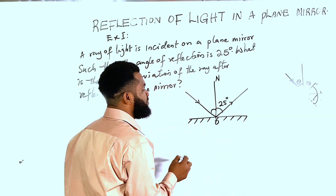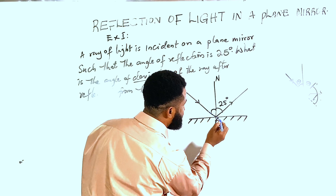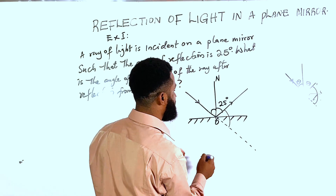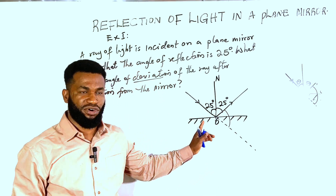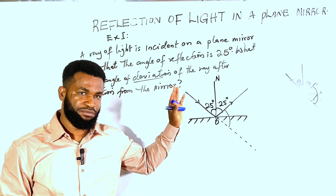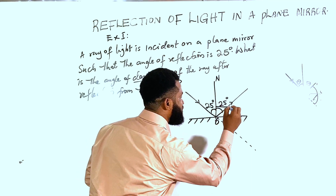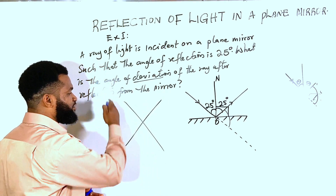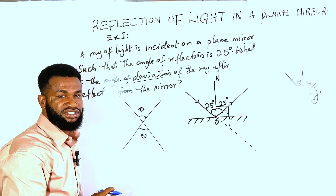Now I'm looking for the deviation. The incident ray is supposed to continue straight through. This place where the incident ray meets the normal gives us 25 degrees on one side, and from that normal to the mirror surface is 90 degrees. When lines cross, vertically opposite angles are equal, so this angle must equal the opposite angle.